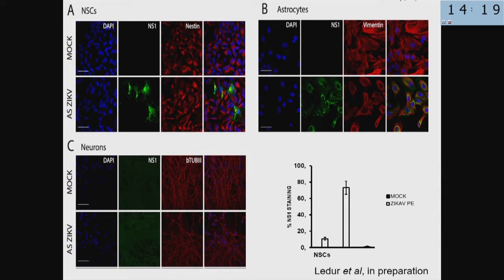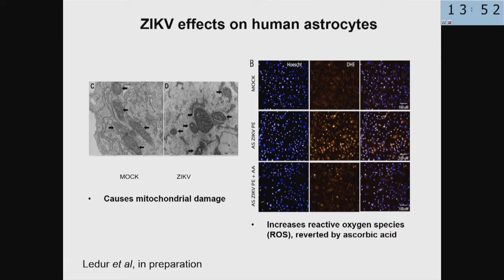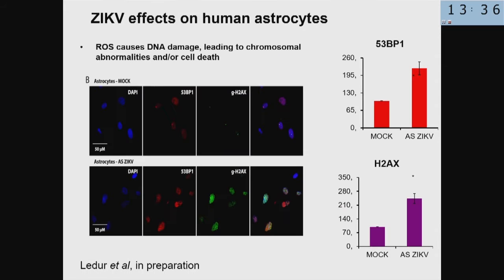We infected these astrocytes and compared the infection of astrocytes with neurons and with neuro stem cells. There is much more infection in astrocytes compared with neuro stem cells, and there is basically no infection in differentiated neurons after exposure to the Zika virus. Working specifically with astrocytes, we showed that the infection damages mitochondria and increases levels of reactive oxygen species — which we can inhibit using, for example, ascorbic acid. After infection, we also see an increase in DNA damage based on expression of H2AX and phosphorylated P53.